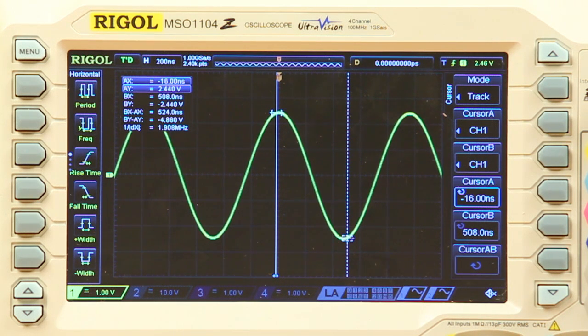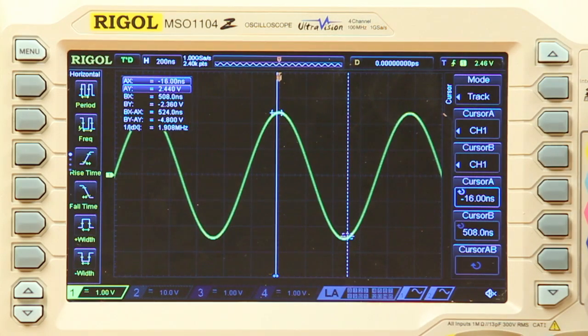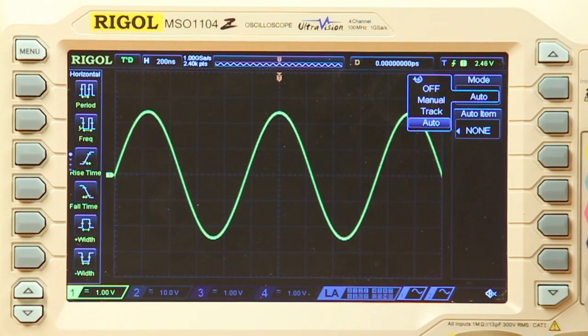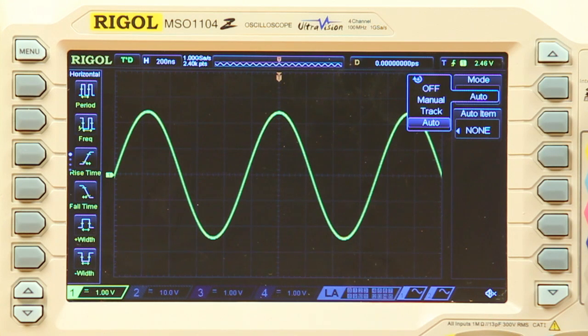Now, let's go to auto mode. You'll notice that there are no cursors displayed when we do this. Since auto mode works with auto measurements, we have to choose a measurement first and then the cursors will appear.